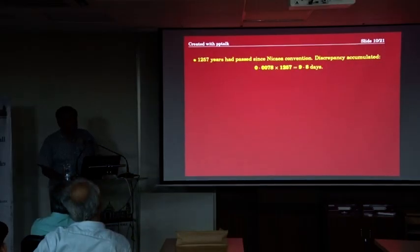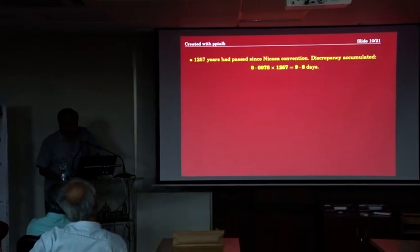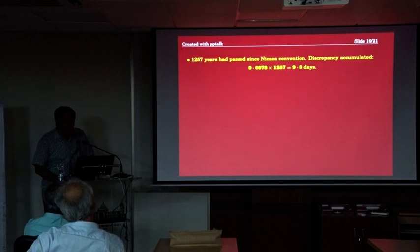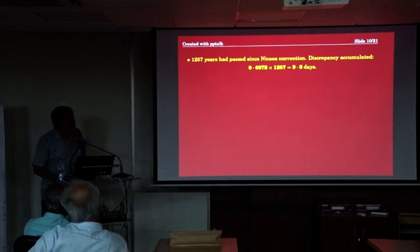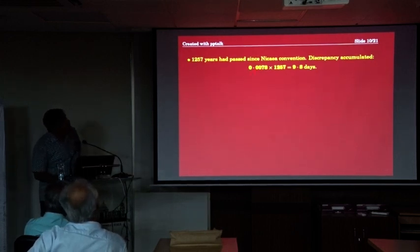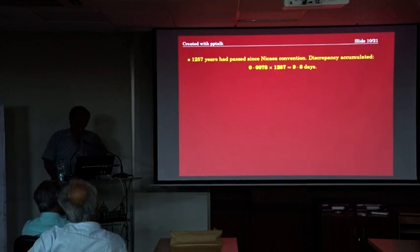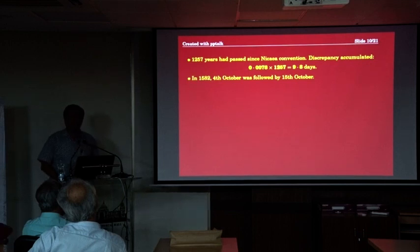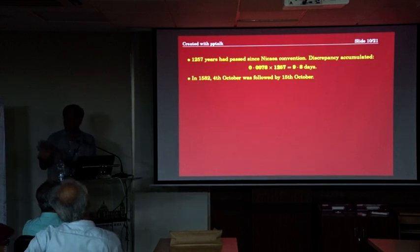From the Nicene Convention of 325, 1257 years have passed, so the discrepancy has accumulated. This per-year discrepancy times 1257 is 9.8 days — about 10 days. So in 1582, the 4th of October was followed by the 15th of October, to first correct the mistake.